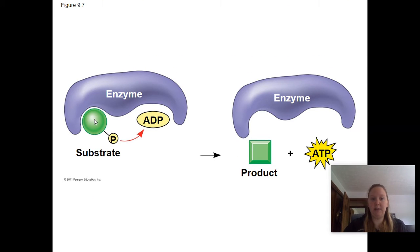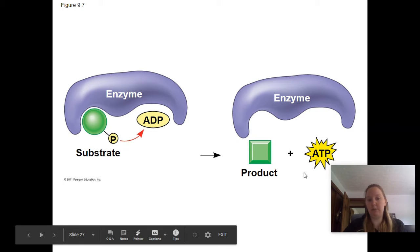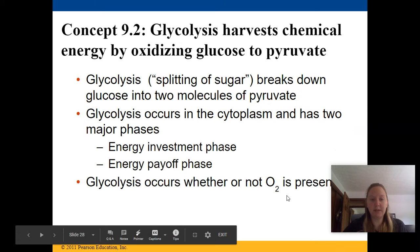A substrate comes in with a molecule of phosphate, binds to the ADP molecule, makes a product, and a molecule of ATP is the result.